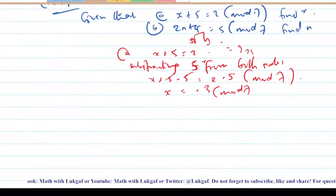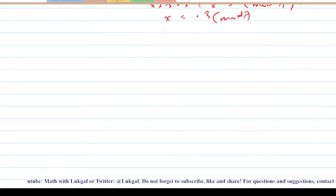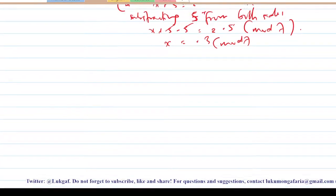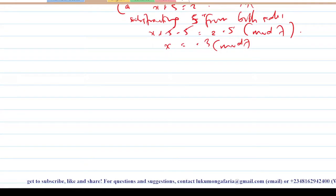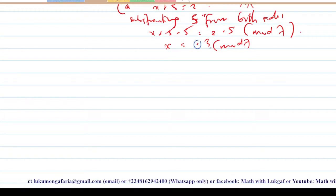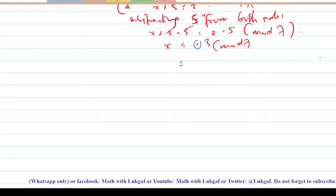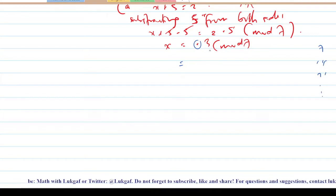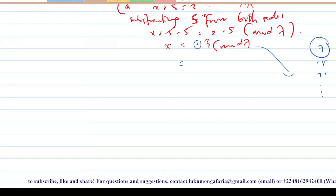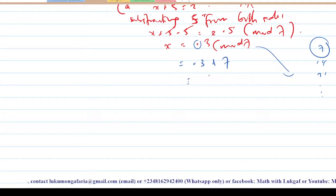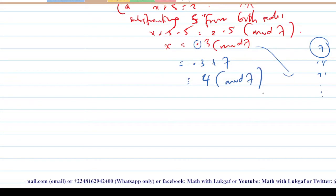Since we are working in modulo 7, minus 3 is not part of the residues, so you have to convert it to simplest form. Get rid of the negative, keep 3, then check the multiples of 7: 7, 14, 21 and so on. The one closest to 3 is 7, so add 7 to minus 3, which gives you 4. Therefore x equals 4 in modulo 7.